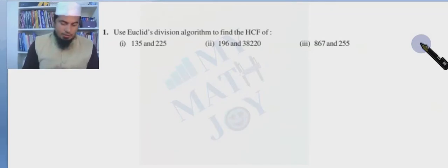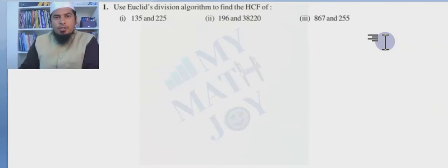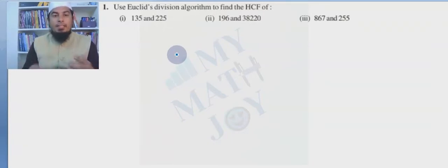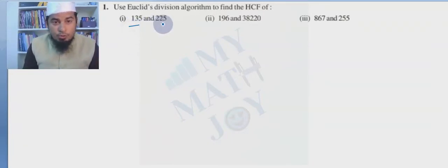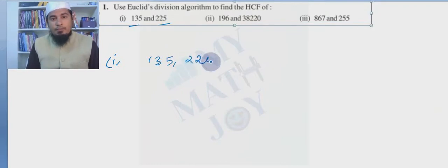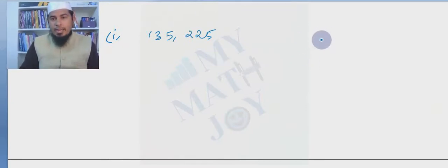Now let us use Euclid's division algorithm to find HCF. I want to take you back to the sixth-class method where you found HCF of numbers. HCF is the highest common factor — the highest number which can divide both numbers. The first question is to find the HCF of 135 and 225.